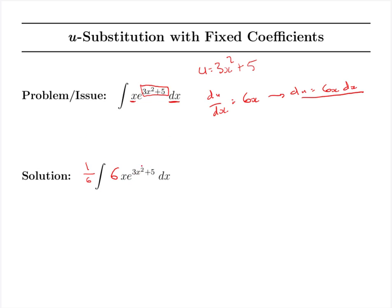Now I've got my u right here, and I also have du right here. So my new integral is this 1 sixth still out front. That's from offsetting my inserted coefficient. And now I've got e to the u du at the end.